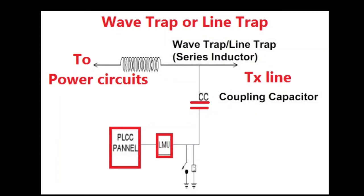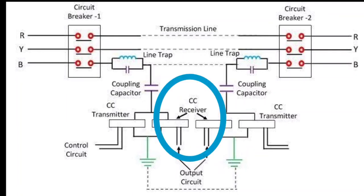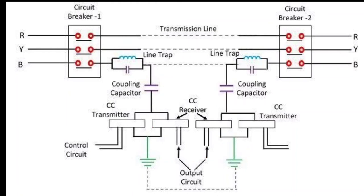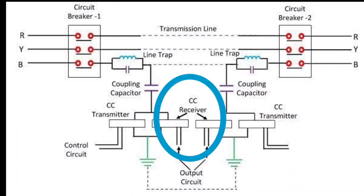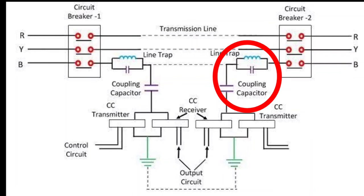The carrier current receiver receives the carrier current from the transmitter at the distant end of the line. The receiver converts the received carrier current into DC voltage that can be used in a relay or other circuit to perform any desired function. The voltage is zero when carrier current is not being received. The line trap is inserted between the bus bar and the connection of the coupling capacitor to the line. It is a parallel LC network — inductor-capacitor network — tuned to resonance frequency at high frequency. The line traps restrict the carrier current to the protected section to avoid interference with other adjacent carrier channels, and also avoid loss of carrier current signal to the adjoining power circuit.